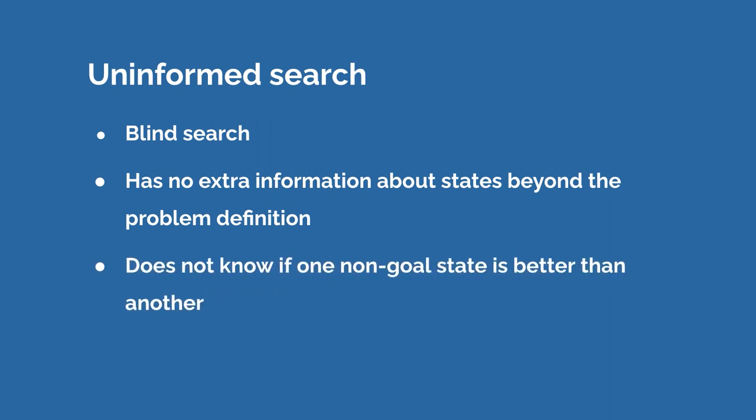In this type of algorithm, it does not know if one non-goal state is better than another. To put it simply: if I'm standing in front of two doorways to navigate through a maze as a robot, I won't know if one door is more efficient than another to get to my end state of exiting the maze. I won't have extra information. That makes it inefficient, but we still need to know how it works because sometimes an inefficient solution is the only solution. Sometimes brute force is the only solution, and commonly brute force is the starting solution — then you would increment upon it to improve.